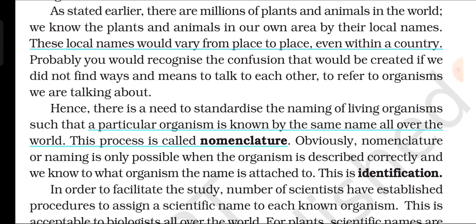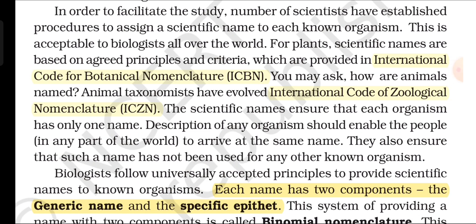Hence, there is a need to standardize the naming of living organisms such that a particular organism is known by the same name all over the world. This process is called nomenclature. Nomenclature or naming is only possible when the organism is described correctly and we know to what organism the name is attached — this is identification. Scientists have established procedures to assign a scientific name to each known organism. For plants, scientific names are based on agreed principles provided in the International Code for Botanical Nomenclature (ICBN). For animals, taxonomists have evolved the International Code of Zoological Nomenclature (ICZN). Scientific names ensure that each organism has only one name, and that such a name has not been used for any other known organism.